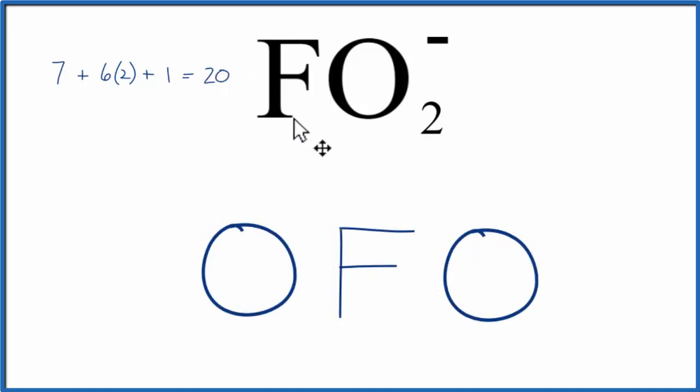We have 20 total valence electrons for FO2-, so let's put 2 between atoms to form the chemical bonds, then we'll go around and complete the octets on the oxygen atoms.